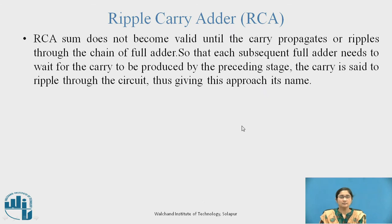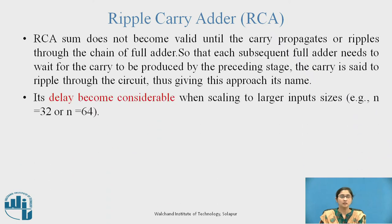The RCA sum does not become valid until the carry propagates through the chain of full adders, so each subsequent full adder needs to wait for the carry to be produced by the preceding stage. The carry is said to ripple through the circuit, thus giving this approach its name. Its delay becomes considerable when scaling to larger input sizes.